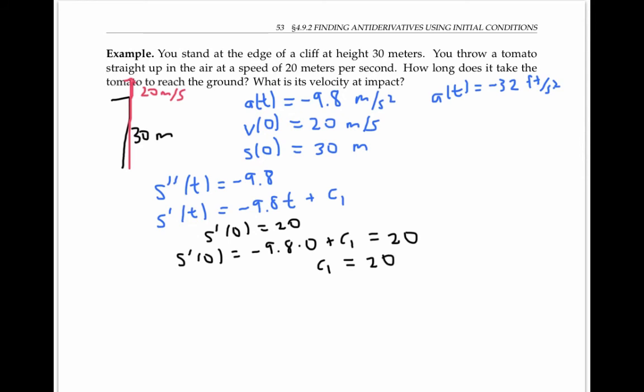Substituting in 20 for C one, I can rewrite s prime of t. Now I can find s of t, the antiderivative of s prime, and that's going to be negative 9.8 times t squared over two plus 20 t plus a second constant C two.